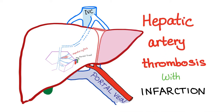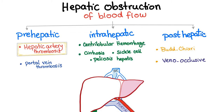Hepatic artery thrombosis with infarction is the topic of today's video. There are three main types of hepatic obstruction of blood flow: pre-hepatic, intra-hepatic, or post-hepatic. Pre-hepatic means before the liver, intra-hepatic means inside the liver, and post-hepatic means after the liver, because the direction of blood flow goes before, in, and after.